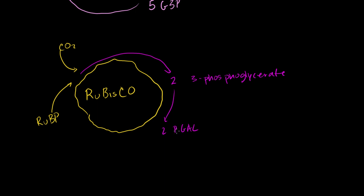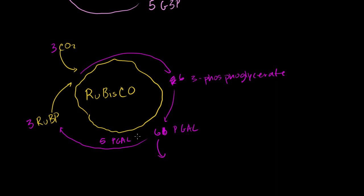For every six PGALs that are produced — so if you start with three RuBPs you get six 3-phosphoglycerates and then six PGALs — five of those PGALs go back into the cycle to produce the ribulose biphosphate, and one of them is the end product of photosynthesis that can be used to produce other carbohydrates.